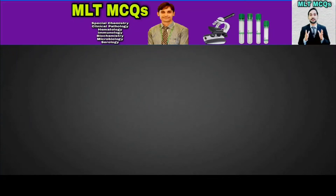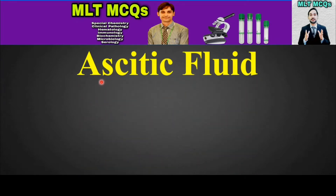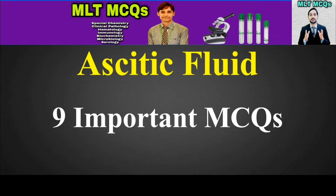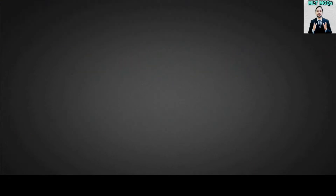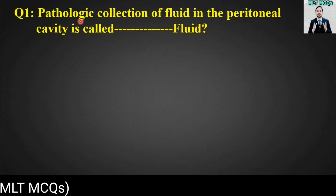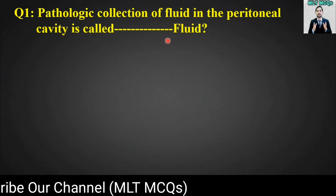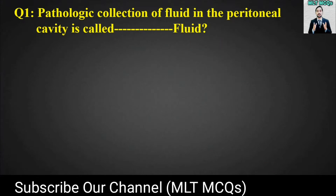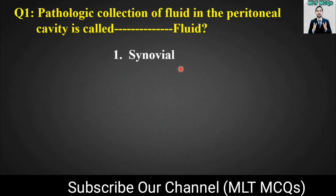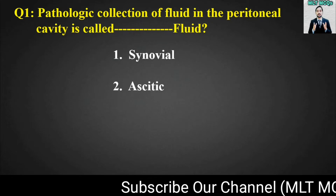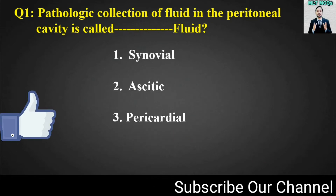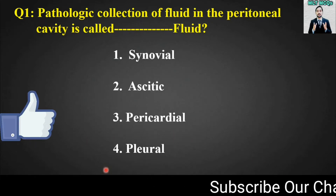Assalamualaikum dear students, you're watching MLT MCQs. I am Kamran. Today MCQs will be from ascitic fluid and we will talk about nine important MCQs. So let's start. MCQ number one is: pathological collection of fluid in the peritoneal cavity is called blank fluid. Options for this MCQ are: synovial, ascitic, pericardial, or pleural.